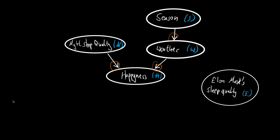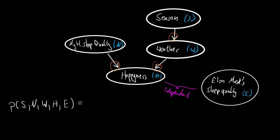So we have a probability density function or probability mass function dependent on the season, the night sleep quality, the weather, the happiness, and Elon Musk's sleep quality. Since there is no link between Elon Musk's sleep quality and any of the other random variables, it is marginally independent. And this means that if we have a joint distribution with it, this is equal to the distribution of E by itself times the rest — times the distribution of S, N, W, and H.